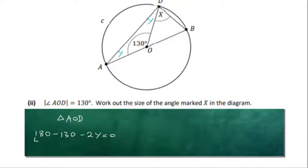180 minus 230 is 50. So therefore, bring it across, and 2Y is equal to 50 degrees, and Y is equal to 25.